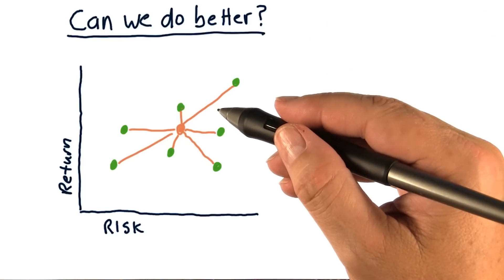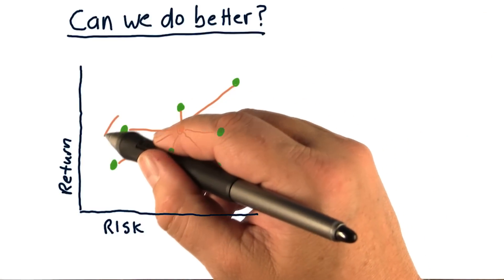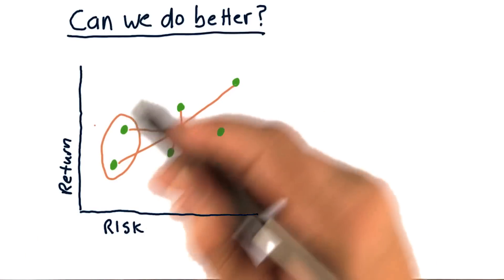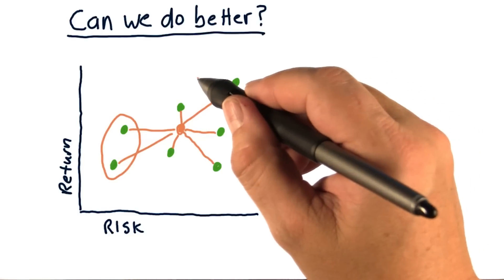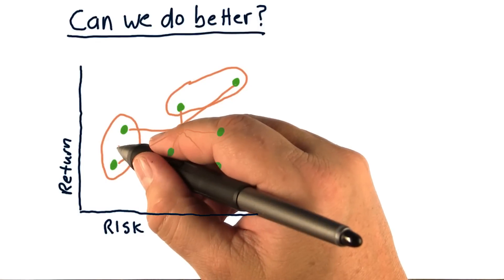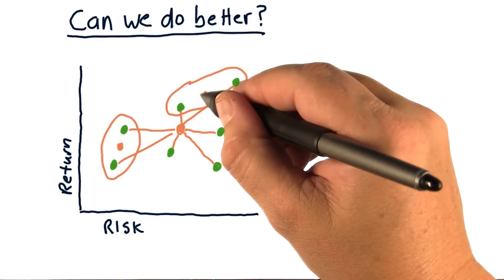Now, if you wanted a low risk portfolio, you should focus on assets that are low risk out here. If you wanted, for instance, high return, you should focus on assets over here. And in both those cases, you would end up with a portfolio, say here, or a portfolio, say, here.